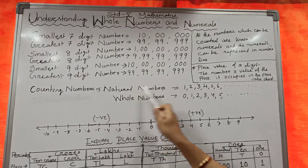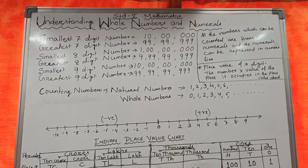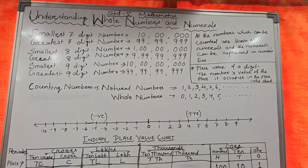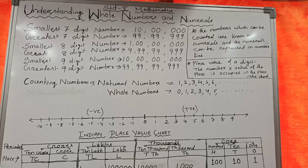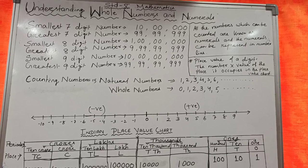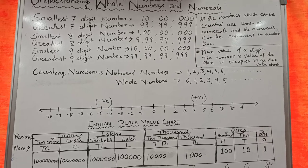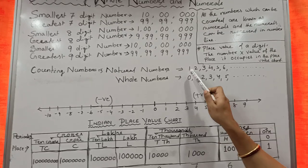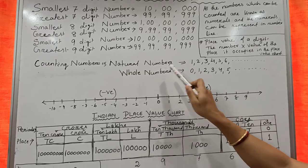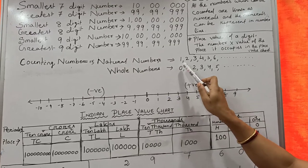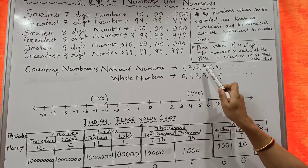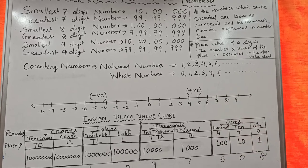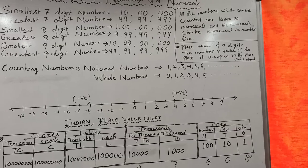Now come to Natural Numbers. Natural Numbers are also known as Counting Numbers. Why are they called Counting Numbers? When we start counting, we start from 1. So Counting Numbers start from 1: 1, 2, 3, 4, 5, 6, and so on. These numbers are called Counting Numbers.